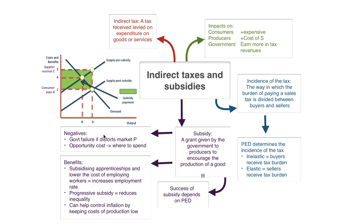Subsidies also provide an opportunity cost. If the government decides to subsidise, say, the cow market, you could question why money is going to farmers for milk when it could be spent on subsidised education to provide a better-skilled workforce. Opportunity cost is a great evaluation point in economics because it's relevant all the time. Government revenue could always be spent elsewhere, so the opportunity cost of a subsidy is definitely something that needs to be considered.